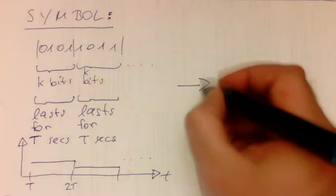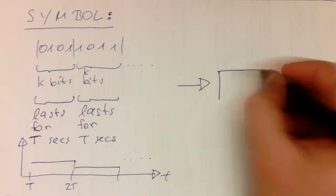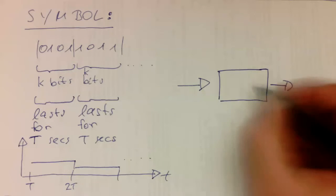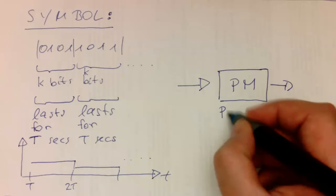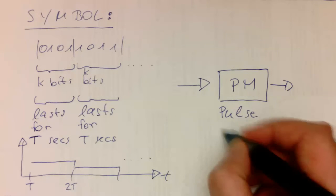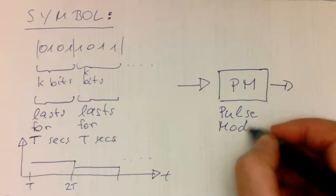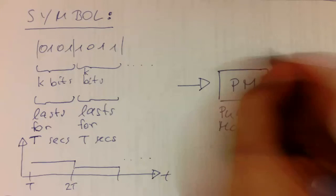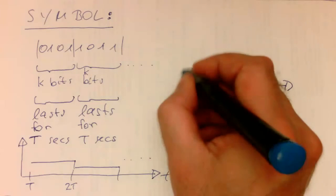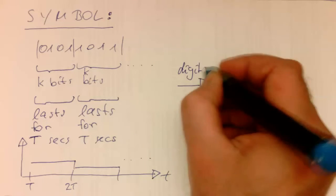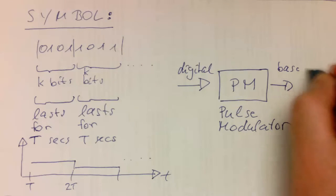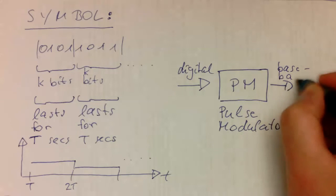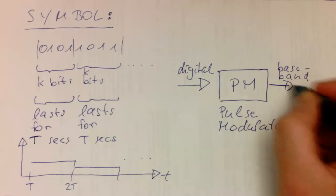So remember, this is here done by this so-called pulse modulator. So here was digital input, and here we've got our baseband. This is an output, and then this would go into our bandpass modulator.